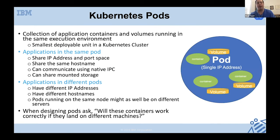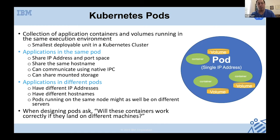A pod is needed because you might have two containers that are related and really need to run together in the same place. The first resource type Kubernetes introduced was a pod — it's a collection of application containers and volumes that run in the same execution environment, and it's the smallest deployable unit in a Kubernetes cluster. Applications in the same pod share an IP address, port space, hostname, and can communicate using native interprocess communication and share mounted volume storage.